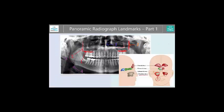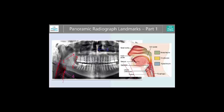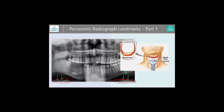To recap, let's start with number one: we have seen the floor of the sinuses and the lateral borders. Then number three, which is our septum. Number four, the airspace because of the pharynx. And number five, the hyoid bone and the cartilage.